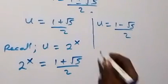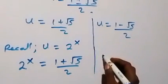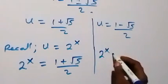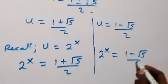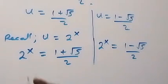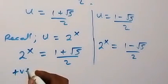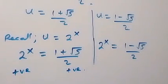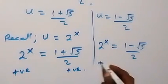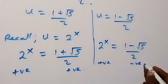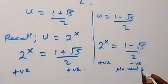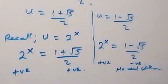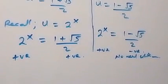Also, on the other side, we have 2 raised to the power x equals to 1 minus root 5 over 2. From here, the first case is positive, but the second case is negative. Since 2 raised to a power cannot be negative, there is no real solution on that side, so we reject it.